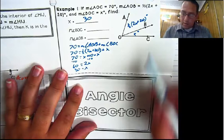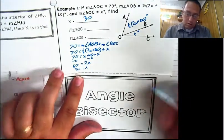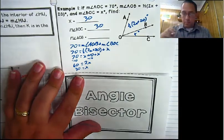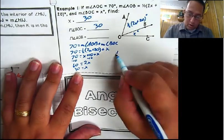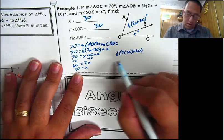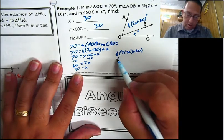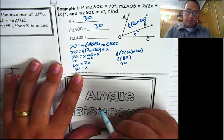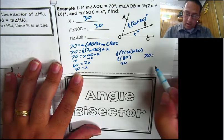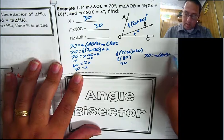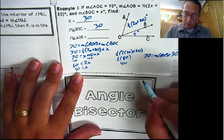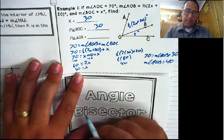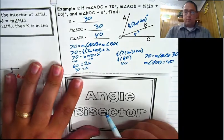So x equals 30. The measure of angle BOC equals x, which is 30 degrees. For the measure of angle AOB, plug in x = 30: ½(2 × 30 + 20) = ½(80) = 40 degrees. Or using the whole angle: 70 equals AOB plus 30, so AOB equals 40 degrees. Same answer - and it also checks that you did it right.